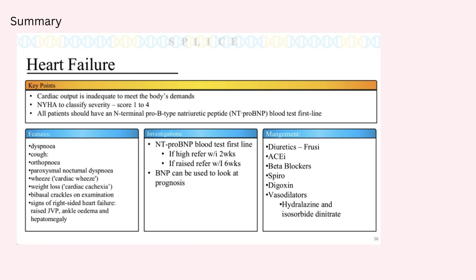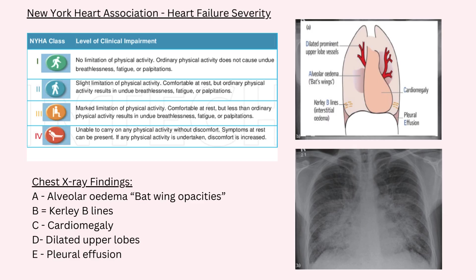In terms of severity, we can classify it using the New York Heart Association classification, numbered from 1 to 4, going from best to worst. It looks at the level of physical activity the patient can do and the level of symptoms they have. In stage one, they have absolutely no limitation on physical activity and can do any form of activity without becoming breathless, fatigued, or getting symptoms of heart failure.